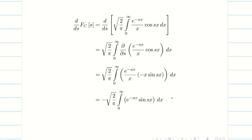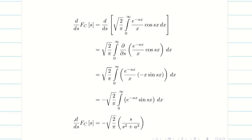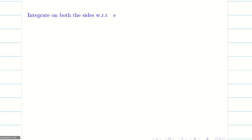We know the answer for this integral immediately. We get minus√(2/π) multiplied by s/(s²+a²). Therefore, the differentiation of F_c(s) with respect to s equals this result. But I don't want the derivative — I want F_c(s) itself. So, integrating both sides with respect to s will give me the answer.